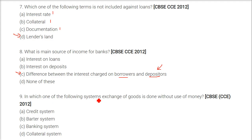In which one of the following systems is exchange of goods done without the use of money? There is no money involved — and this is the barter system. For example, someone sells wheat to someone who is selling shoes; there is no money involved.